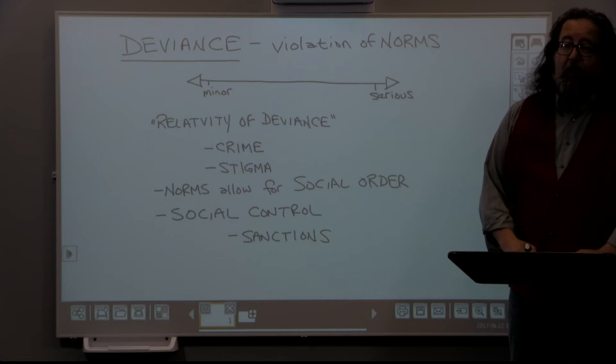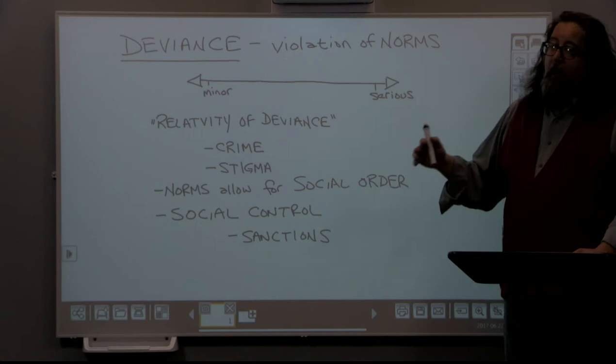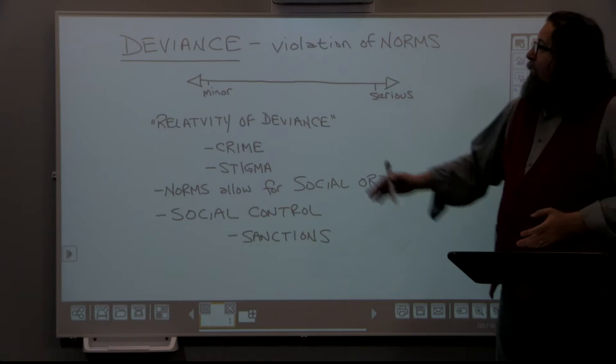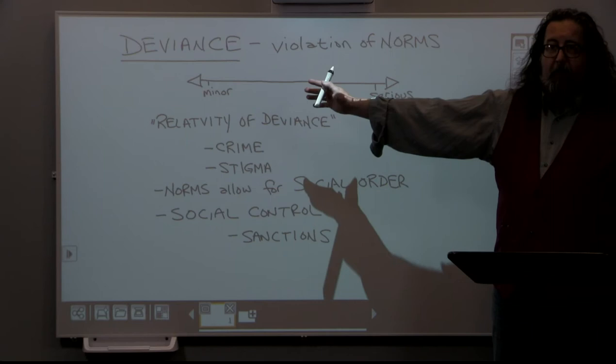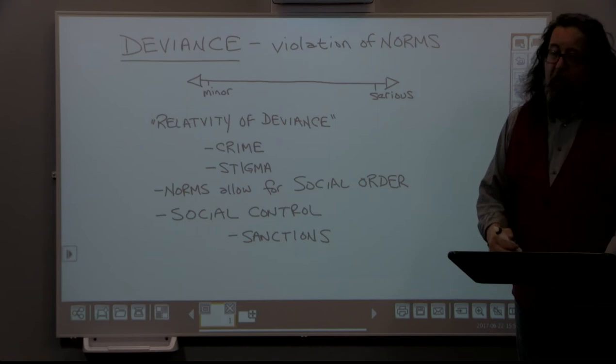And then a third scenario: I come into class and say over the weekend I got arrested for murder. That's clearly a much more serious violation of the norm. So we can clearly see that although the overall definition of deviance is violation of a norm, there's a pretty large continuum of behavior — from mild or minor all the way up to serious — in how we regard that behavior. This brings us to the very important definition: the relativity of deviance.